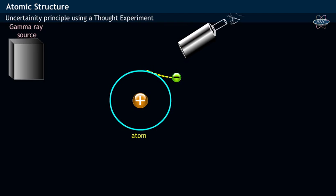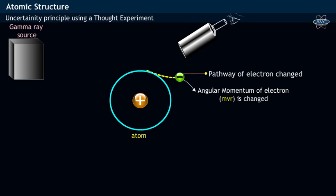This causes the electron to take a different pathway. That is, the momentum of the electron is changed.